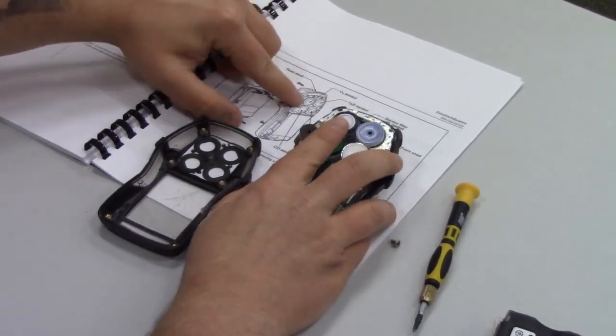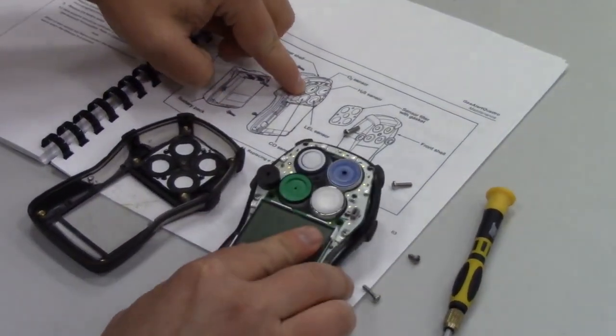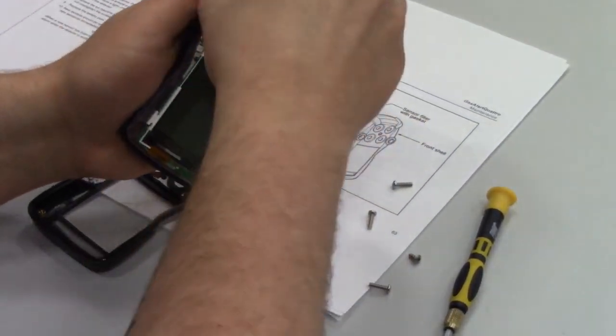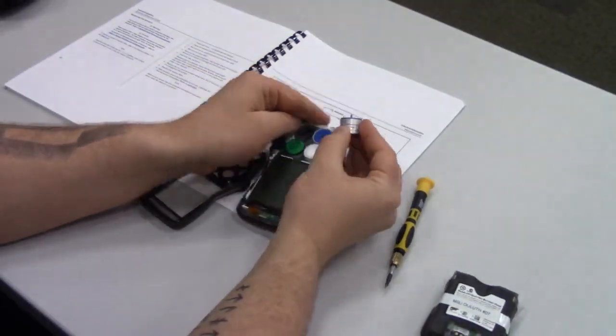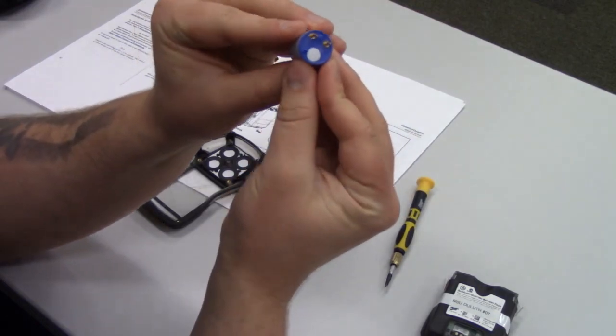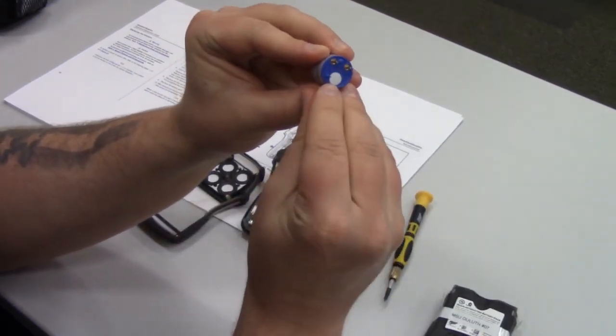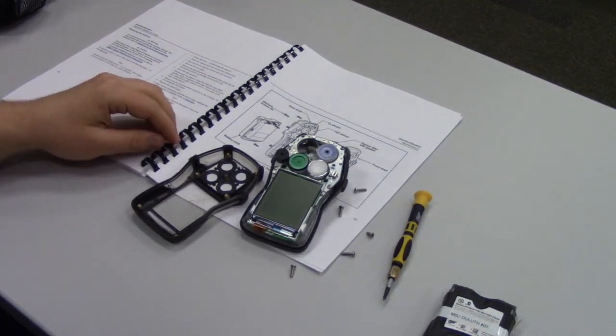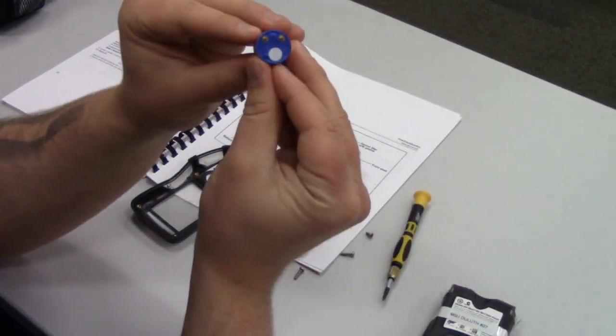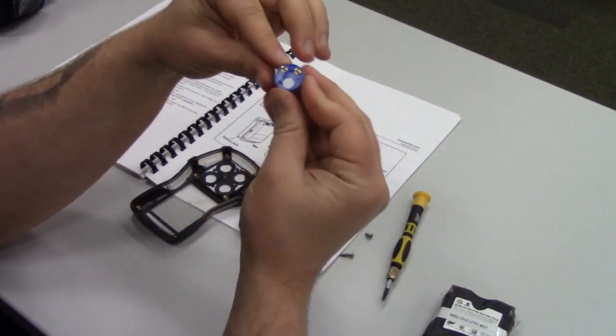I want to pull that out. You can see on here there are three prongs: two that are conducting and one that is not. When we get our new sensor, you can see it's the same way.